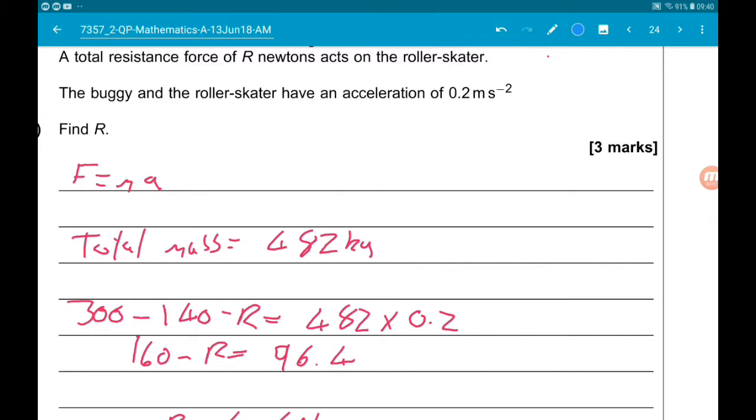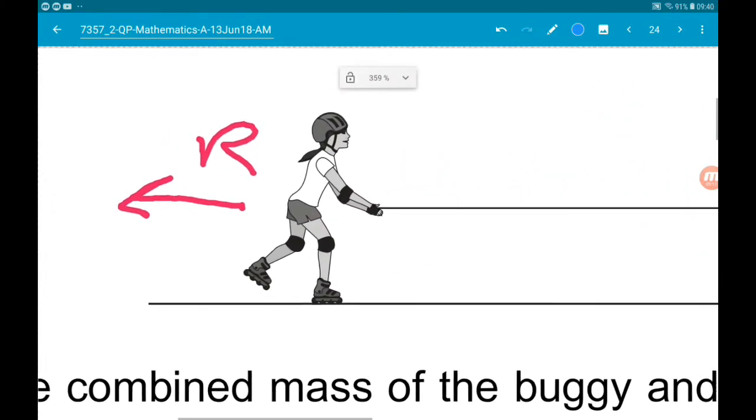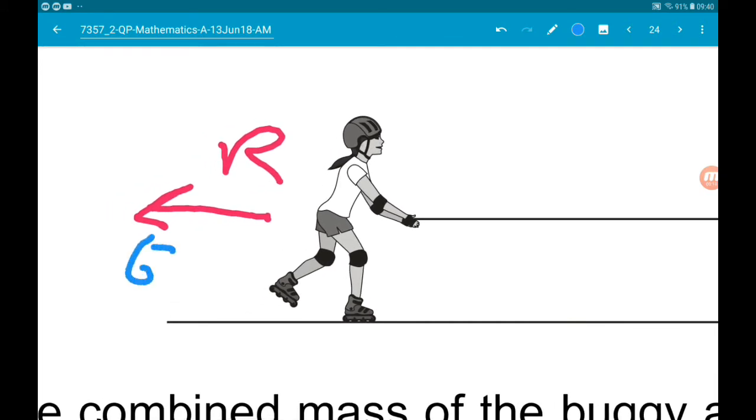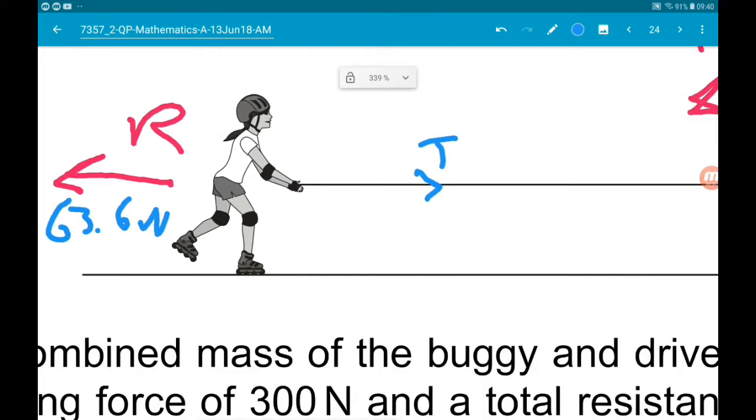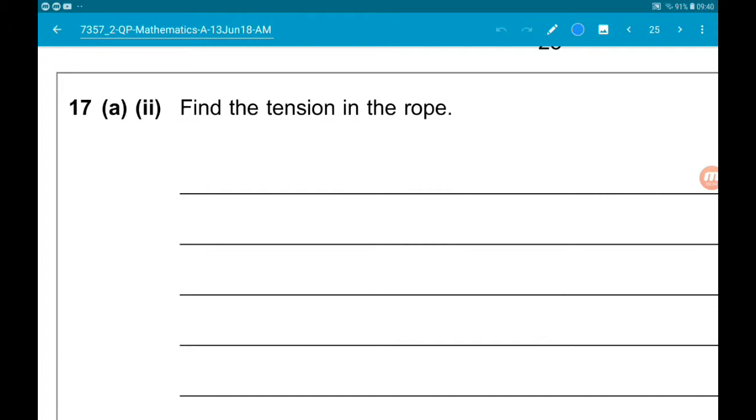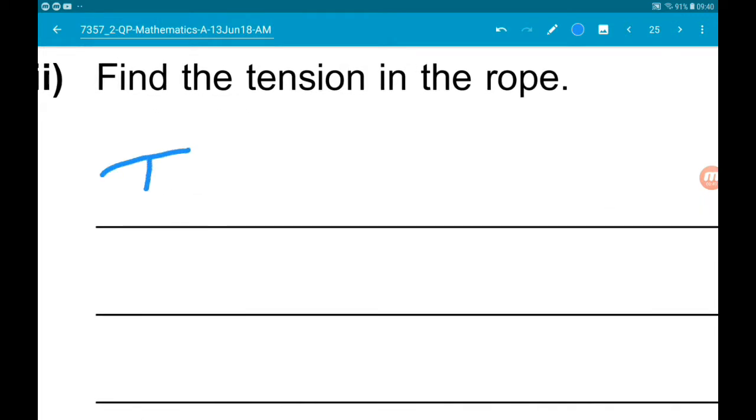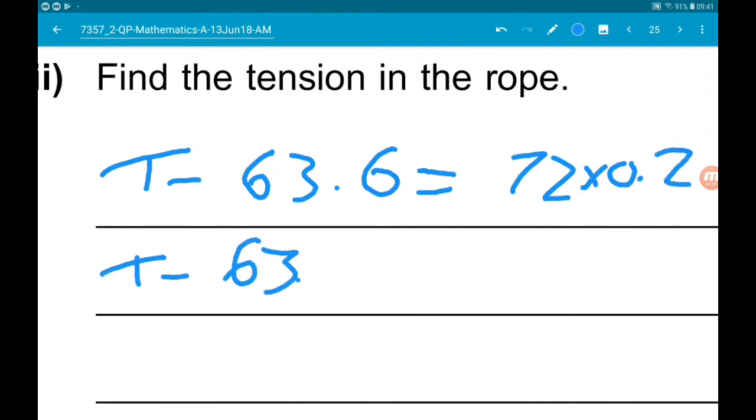So we now know that the resistance force on the roller skater is 63.6 newtons. Now as far as the roller skater is concerned, tension is the driving force. So we know that the mass of the roller skater is 72, we know our acceleration. So we can say then that tension minus the resistance force equals mass times acceleration, so 72 times 0.2. So T minus 63.6 is equal to 14.4.